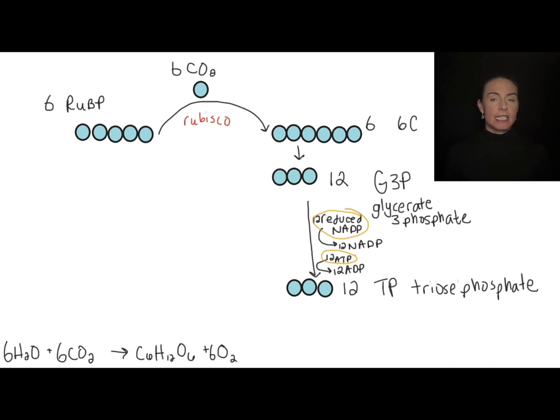Now, two of these TPs are going to leave the cycle and these two TPs are going to be converted into glucose. And this is great because we know glucose is six carbons and I have six carbons to spend. So I've made my one glucose molecule.